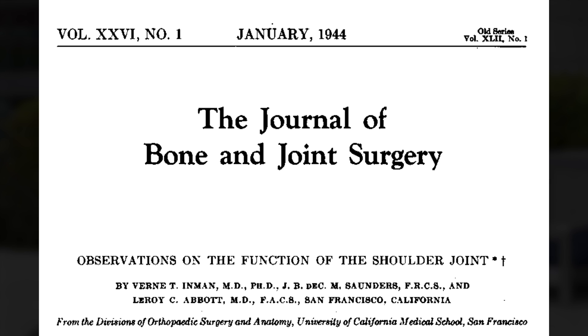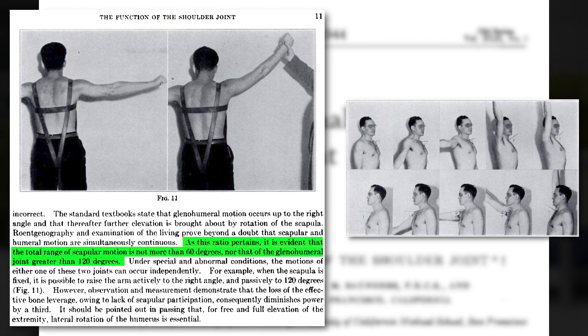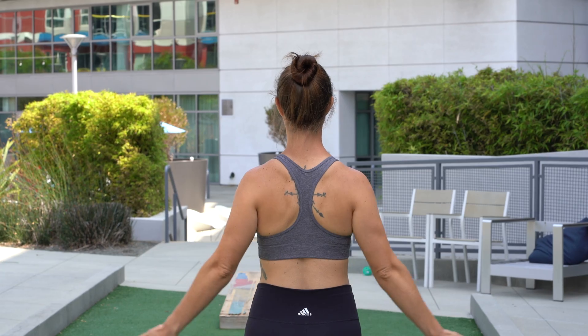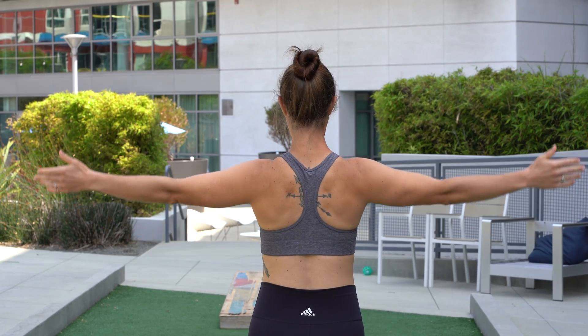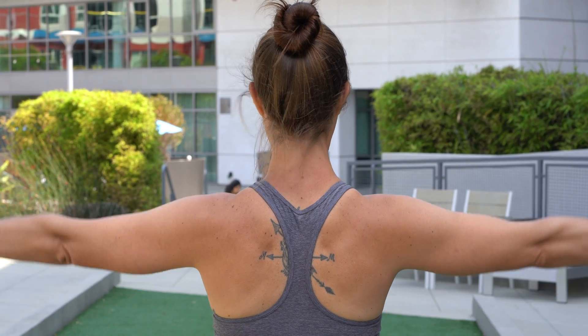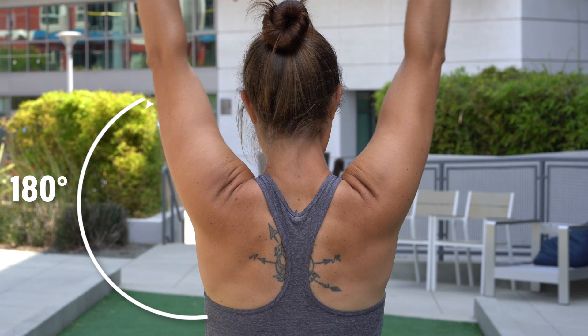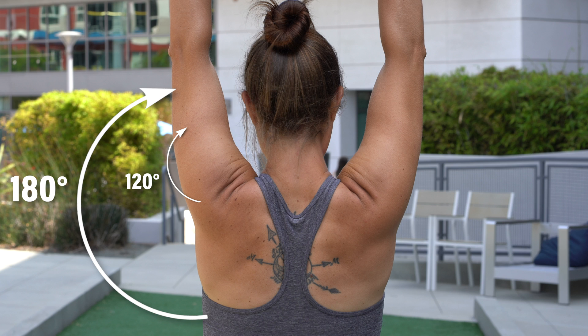The scapulohumeral rhythm, coined by Dr. Codman in the 1930s, refers to these four joints working together to create movement. It was widely popularized by Inman and colleagues in 1944, who used imaging and bone pins in a single subject to determine that the normal scapulohumeral rhythm occurred in a two to one ratio. To simplify it, I'll have Nicole raise her right arm into 180 degrees of abduction. According to this two to one ratio, I would expect two degrees of glenohumeral abduction for every one degree of upward rotation. Therefore, for her to get her arm to 180 degrees of abduction, I would expect 120 degrees from the glenohumeral joint and 60 degrees from the scapula.